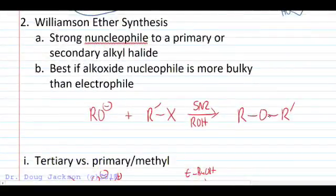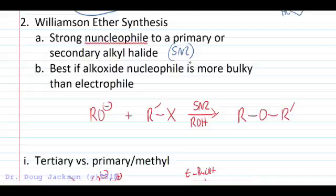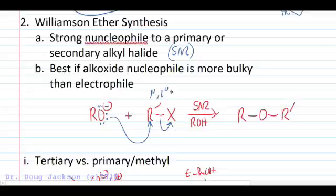The Williamson ether synthesis will take a strong nucleophile to a primary or secondary alkyl halide because we are looking at SN2 conditions. Because of that, we want our nucleophile to be more bulky than the electrophile so that our SN2 reaction, one of our lone pairs here, can attack our carbon, primary or secondary carbon, and create our ether in SN2 conditions. Very high stability of our final product, ether, because we are not in acid conditions. We're in more of kinetic conditions in the Williamson ether synthesis. We've got more control.